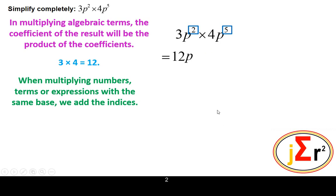So the base of the result will be the same, and we are multiplying numbers, expressions, symbols, or terms that have the same base. The bases are the same and we are multiplying, we therefore add the indices.